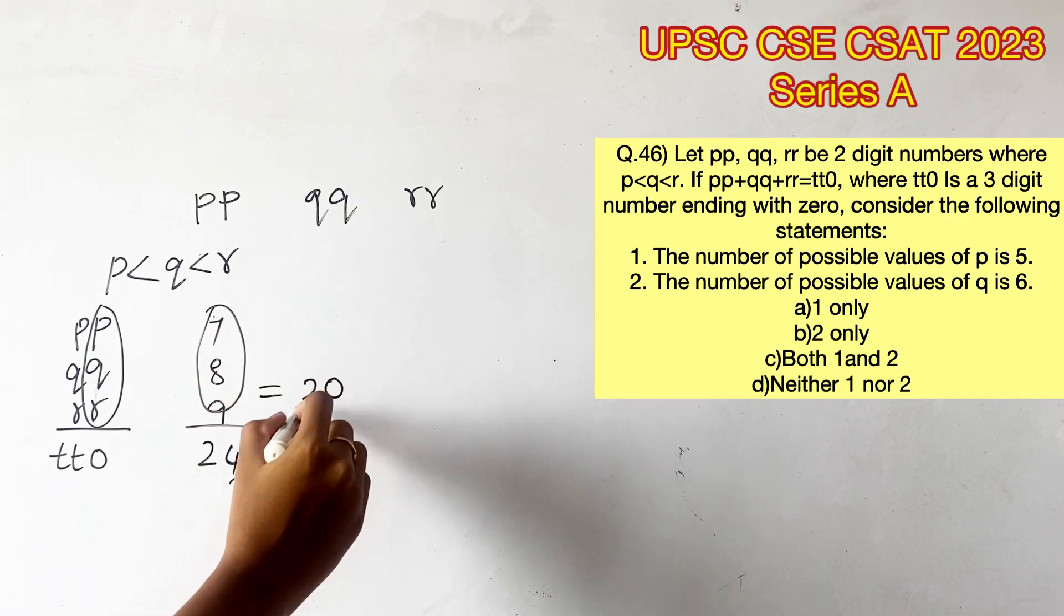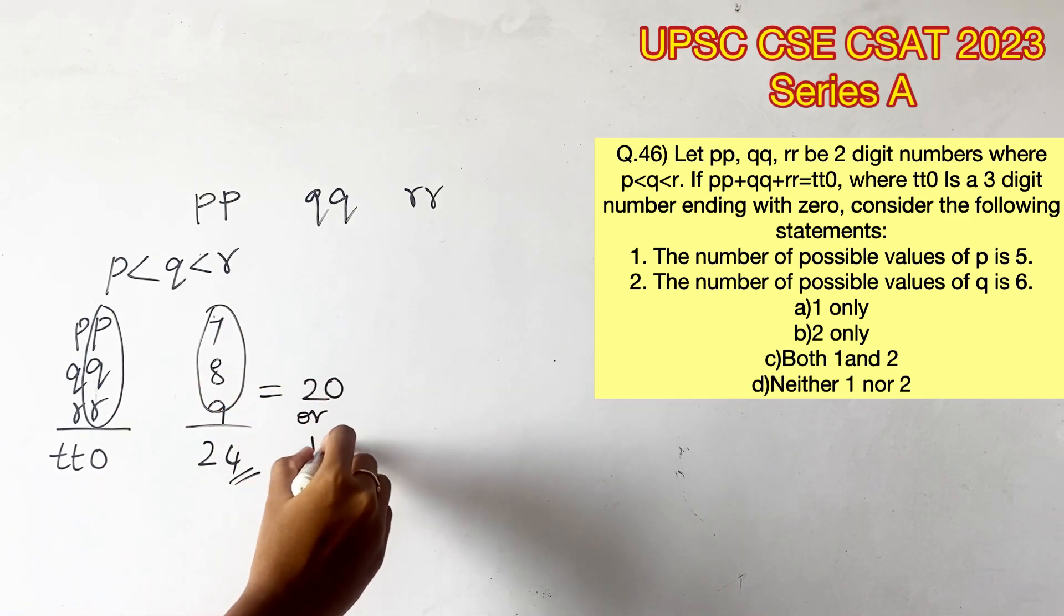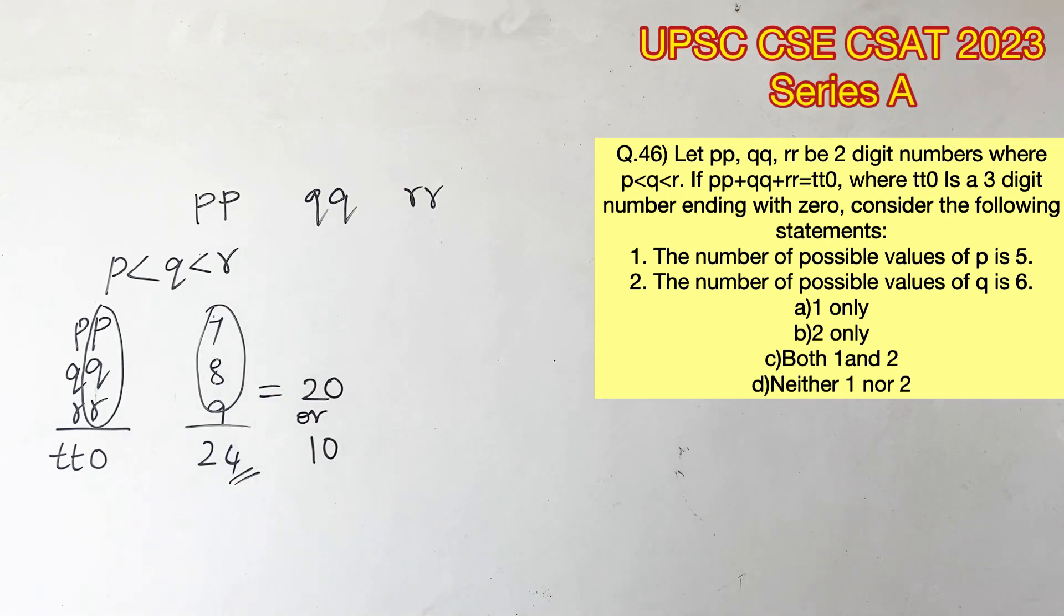The highest value possible for these single-digit numbers is 24. Therefore, the number ending with zero can only be either 20 or 10, considering these single digits.